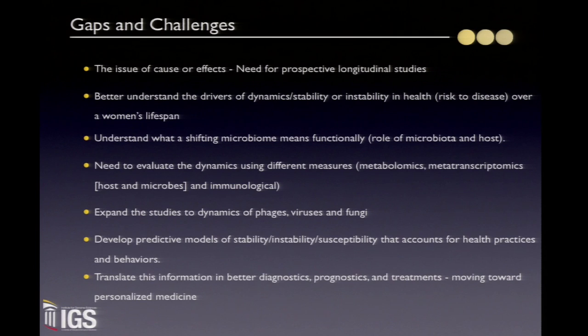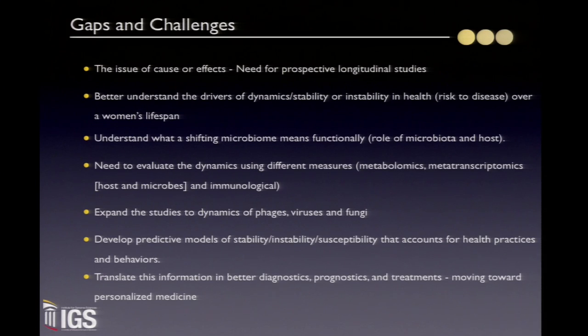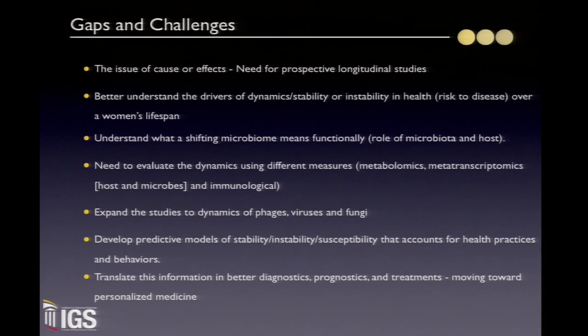We also need to expand studies beyond the bacterial component of the vaginal microbiota to include phages, viruses, and fungi. All of this needs to be used to develop predictive models of stability and instability when a community appears to be in a healthy state — models that account for different health practices, antibiotic use, hormonal replacement therapy, and behavior. This needs to be translated into better diagnostics, prognostics, and treatment, moving toward more personalized medicine — especially given the strong association of certain Lactobacillus strains with women over time.